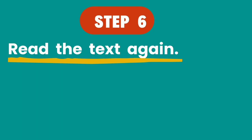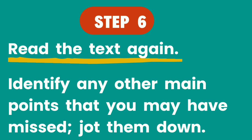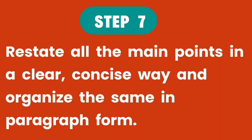Step 6: Read the text again. Yes, we're reading the text once more, this time to identify any other points that we may have missed and to jot them down. So in totality, we would have read the text at least three times before attempting to put the summary together — and that is being thorough.